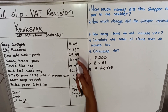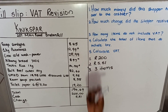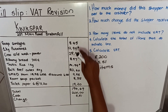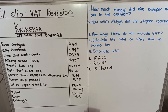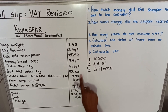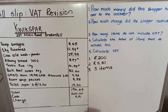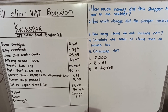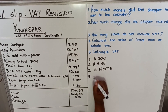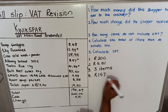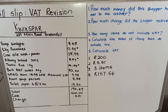Number four: calculate the total of items that do include VAT. They don't want the number of items — they want the total amount of items that include VAT. So you take your calculator and add them up: 8 rand 45, plus 28 rand 99, plus 82 rand 60, plus 9 rand 95, plus 8 rand 35, plus 19 rand 20. The total of items that include VAT is 157 rand 54 cents.